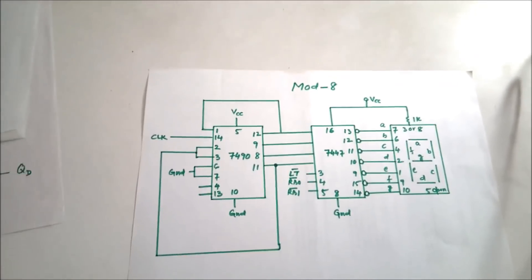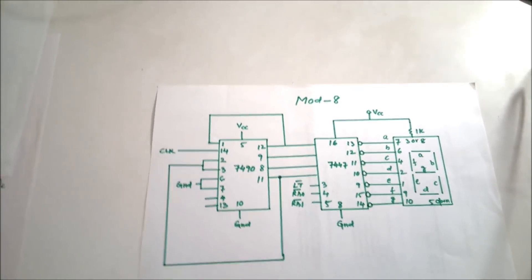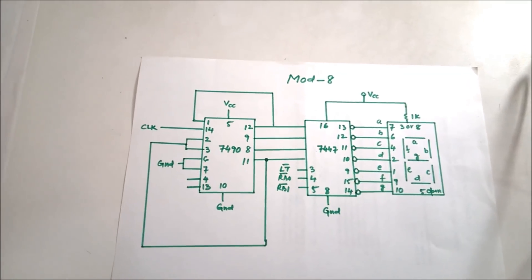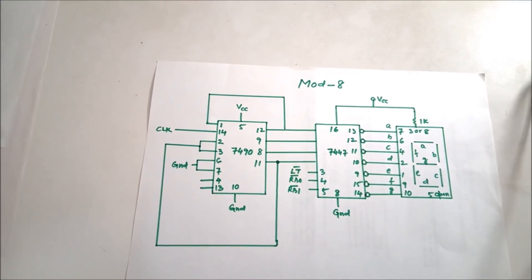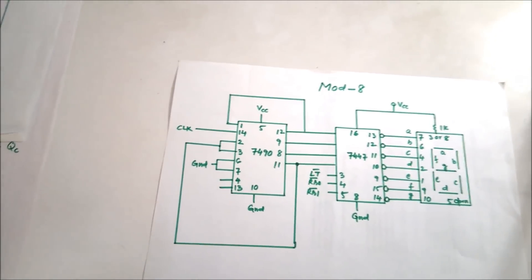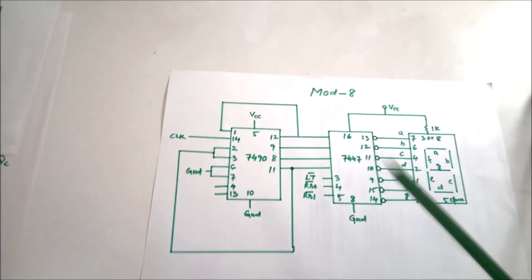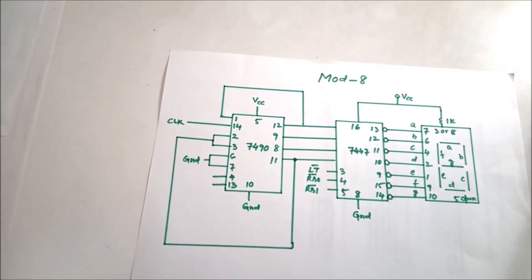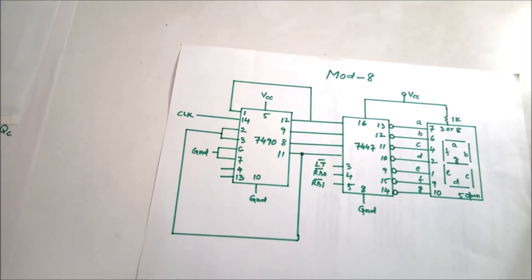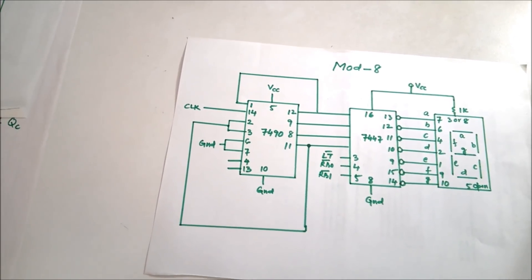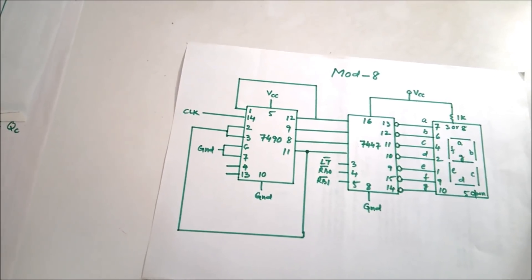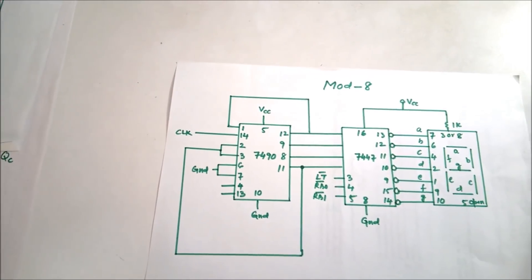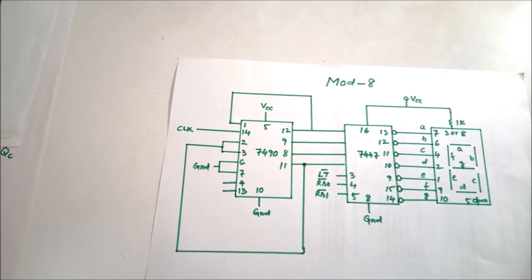Asynchronous Counter Mod 8. You can look at the diagram — the mod 8 is very similar to the mod 10. The only difference is that pin number 2 and 3, which in the case of mod 10 were grounded to deactivate the reset pins, are now connected to pin number 11.